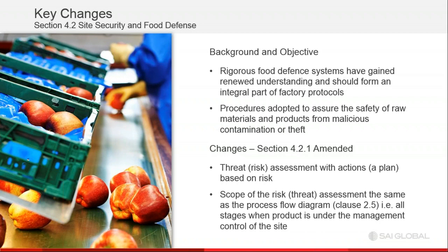The amended section introduces a threat risk assessment with an action plan. Similar to the vulnerability assessment in Issue 7 against fraud of materials, this is a system based much like HACCP, in which we assess threats to products, raw materials, the process, and the site itself. Risks and threats are assessed and action plans with controls are put in place. The scope of the risk threat assessment is the same as the process flow diagram in clause 2.5 — all stages when the product is under the management control of the site.